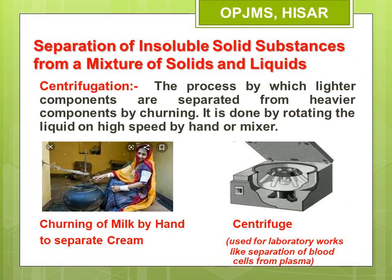The next process is centrifugation — a simple process you may have seen at home. We take out cream from milk by churning, which is done by rotating the liquid at high speed either by hand or using a mixer. When the mixture rotates at high speed, the lighter components are separated from the heavier components. This same technique is used in pathological labs for separation of blood cells from plasma.